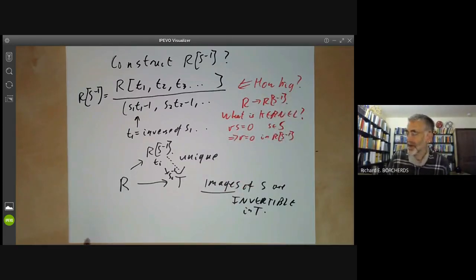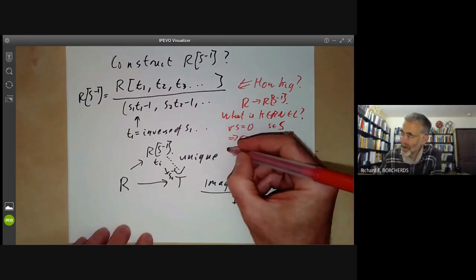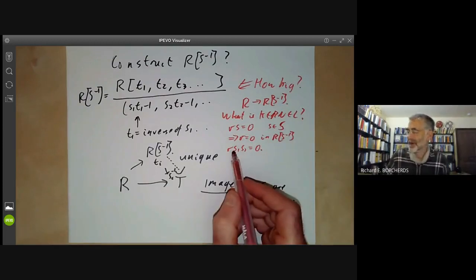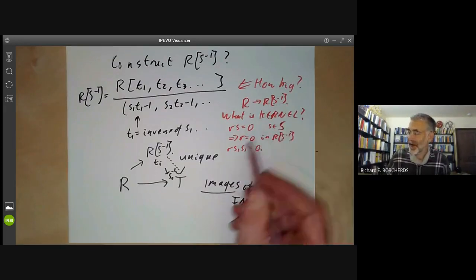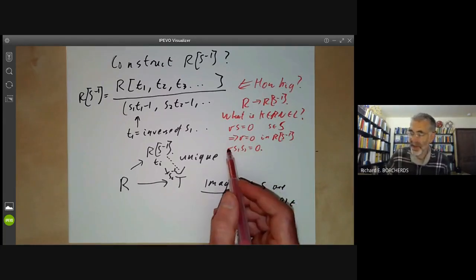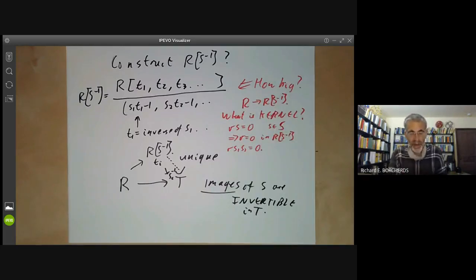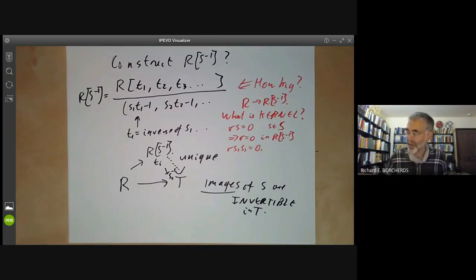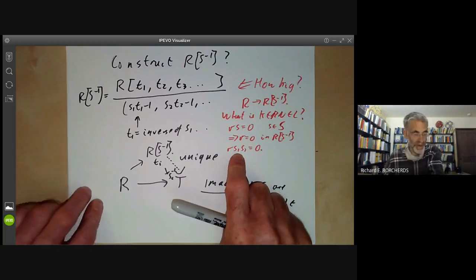Is there anything else in the kernel? Yes — we might have R·S₁·S₂ = 0. If S₁ and S₂ are in S, then R has to be zero. Similarly, if R multiplied by any product of elements of S is zero, then R has to be zero in RS⁻¹. And the answer is that there is nothing else in the kernel — but we have to prove this.